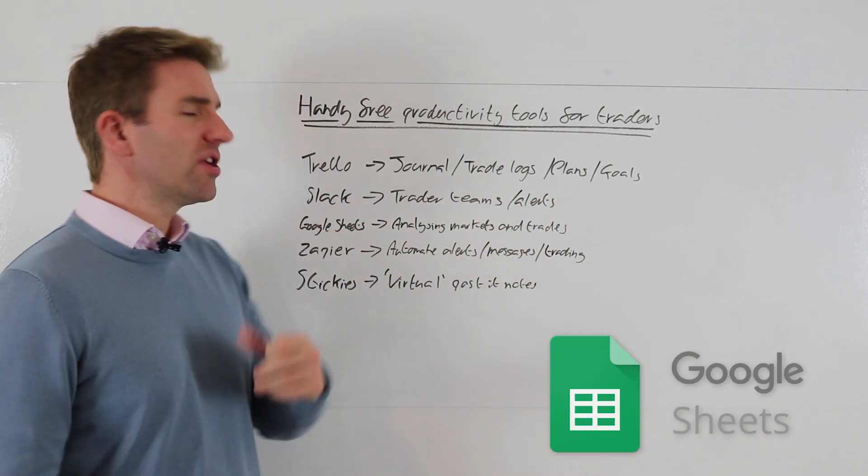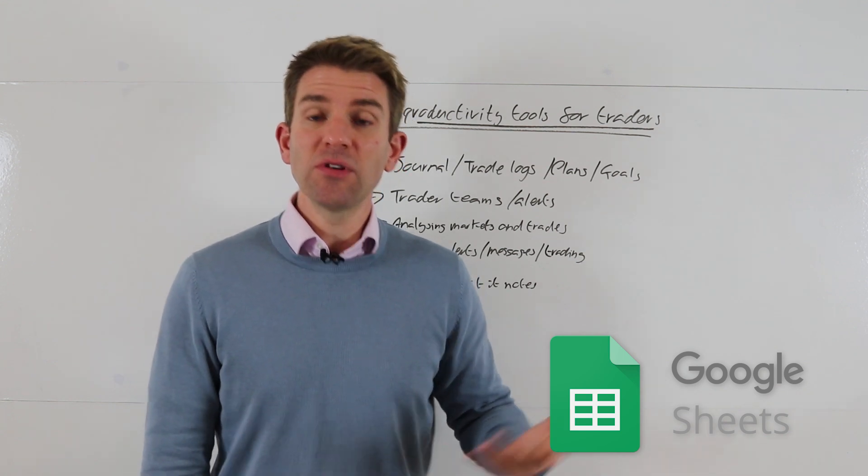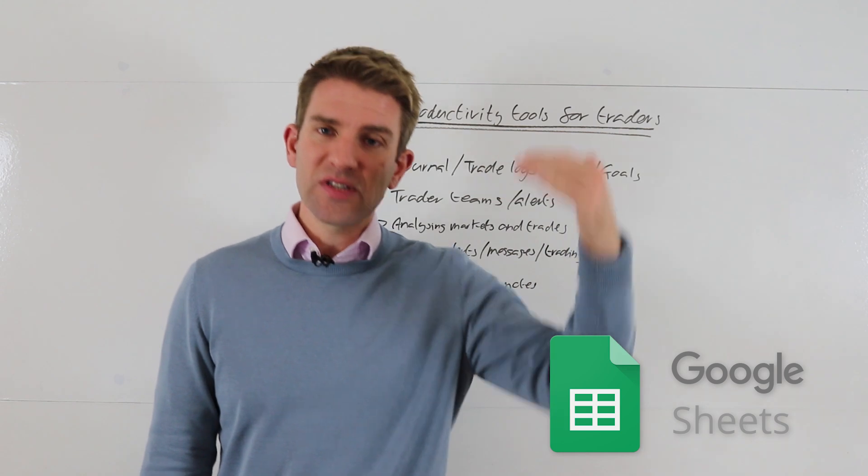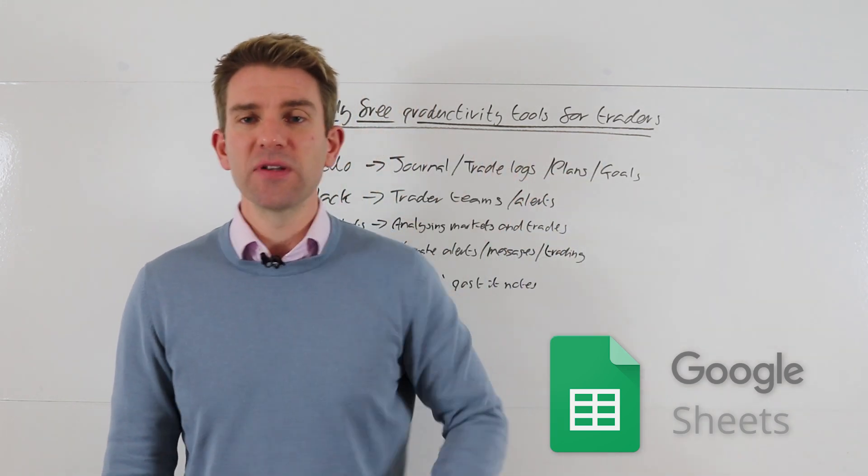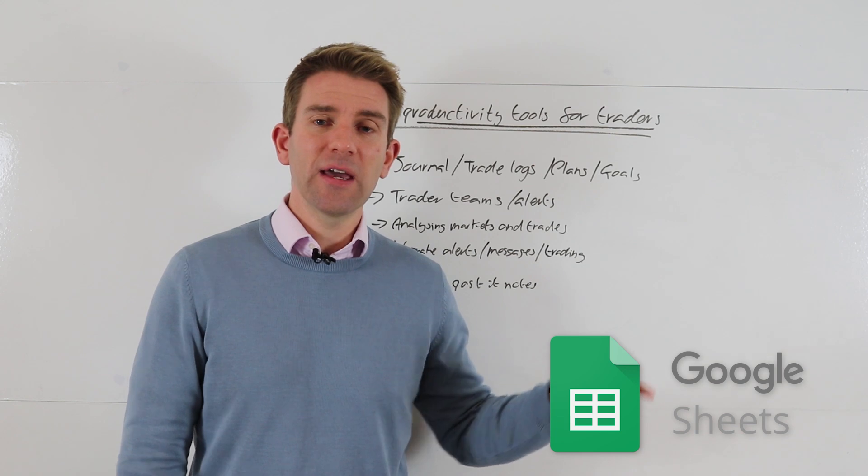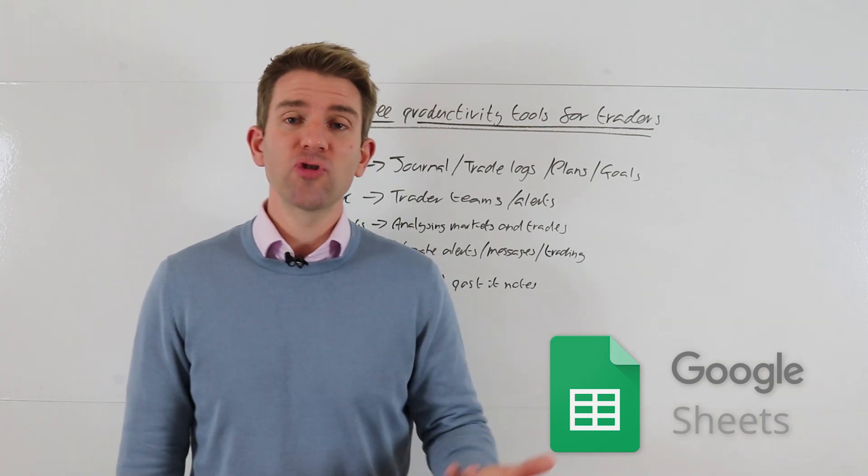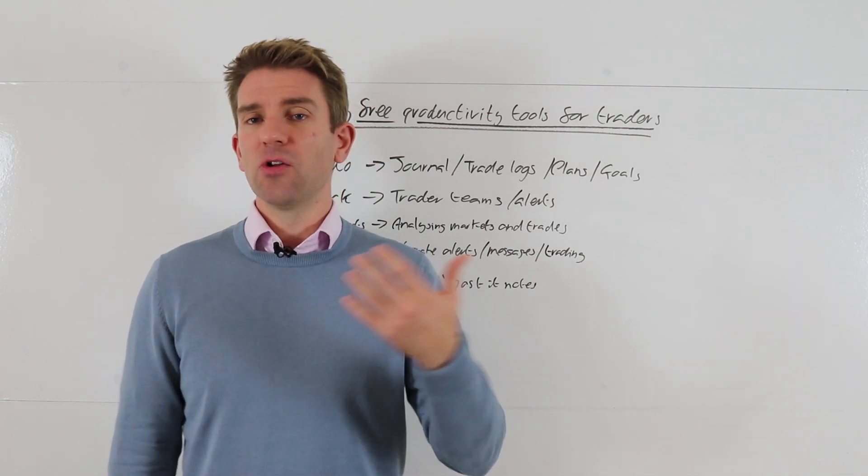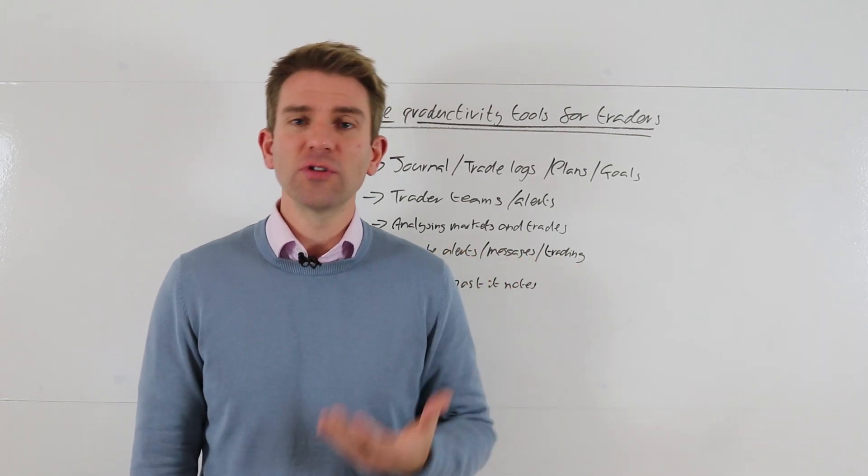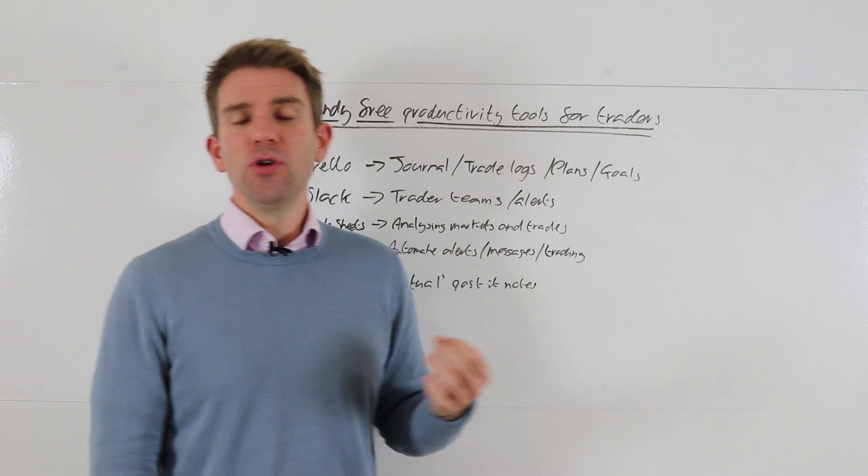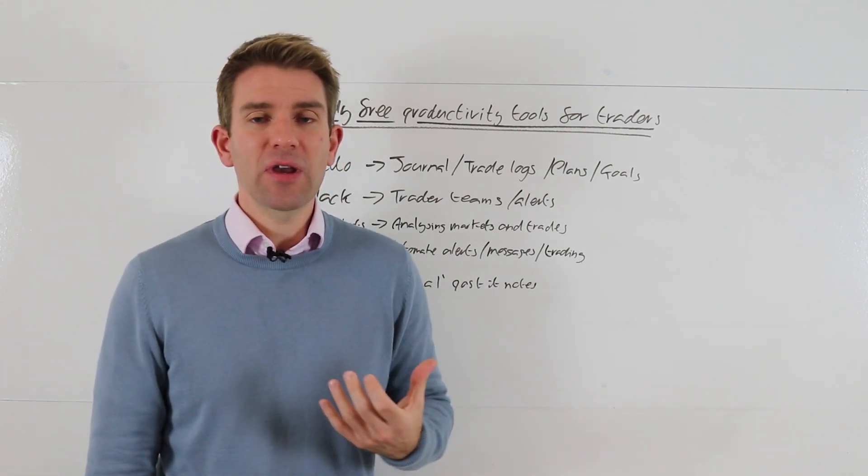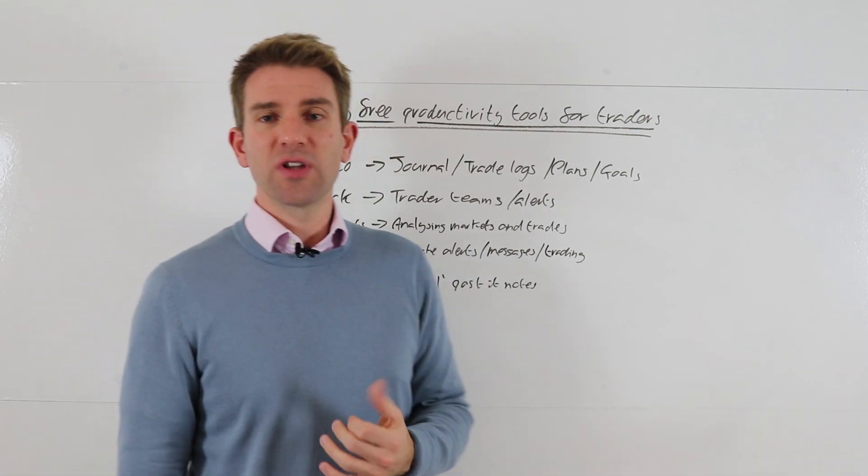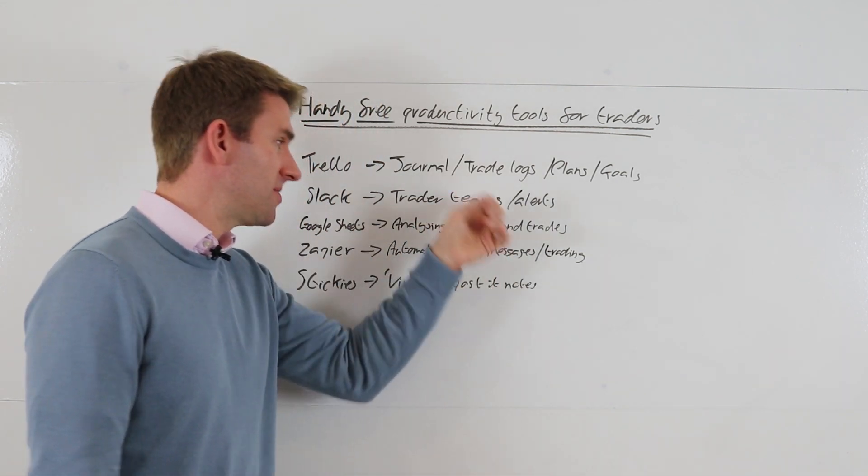Google Sheets - obvious one, free though, don't need Excel. Google Sheets does most of the things we need. Good for analyzing the markets, downloading market data, working out your ranges and bits and pieces, and doing analytics on the market. And also analytics on your own trades, like performance - when you're trading well, when you're trading poorly. Obvious P&L stuff, drawdown, stops - all the stuff that you'd like to do. Very simple calculations, you don't need Excel for it unless you're going crazy. Google Sheets does the job, and Google Sheets hooks into some of these other things we'll talk about in a minute.